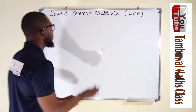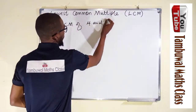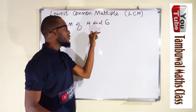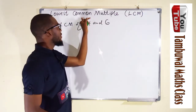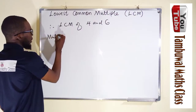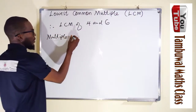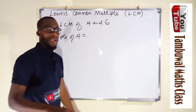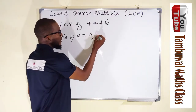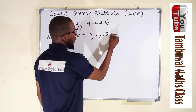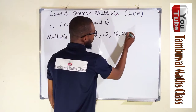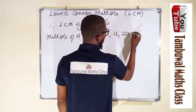We want to find the LCM of four and six. To do this, we list out the multiples of four and six, take the common ones, then choose the least. Multiples of four from the multiplication table: four times one is four, four times two is eight, four times three is twelve, four times four is sixteen, four times five is twenty, four times six is twenty-four.